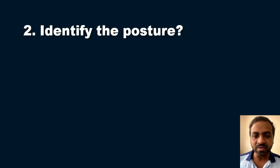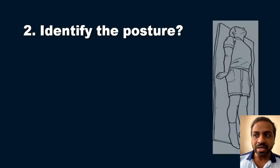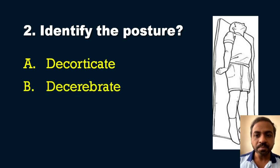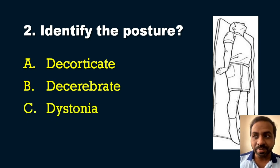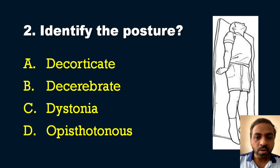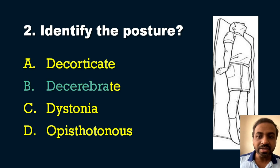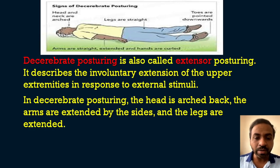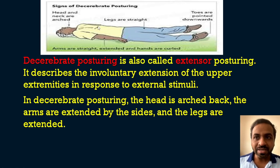The second question is a picture-based question. Your task is to identify the posture. A patient is lying down — identify this poster. The options are: A) Decorticate position, B) Decerebrate posture, C) Dystonia, D) Opisthotonos. Whoever works in the ICU can answer this easily. The answer is option B, decerebrate posturing. These postures are seen in neurologically impaired patients, assessed using GCS motor assessment.